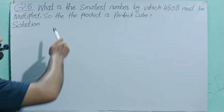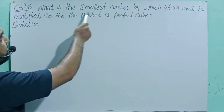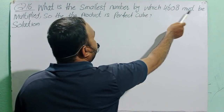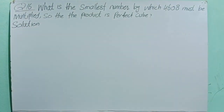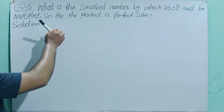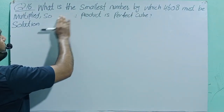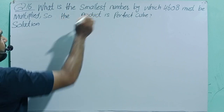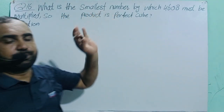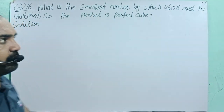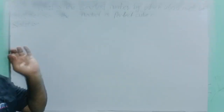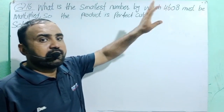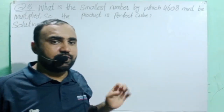Question number 16. What is the smallest number by which 4608 must be multiplied so that the product is a perfect cube? We multiply the smallest prime number with this number so that it becomes a perfect cube.